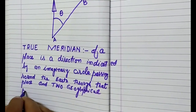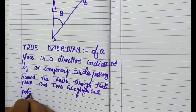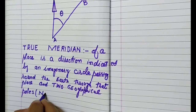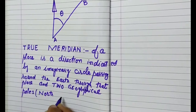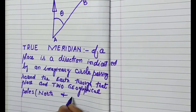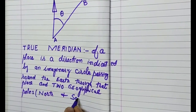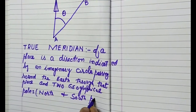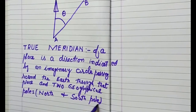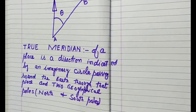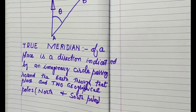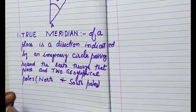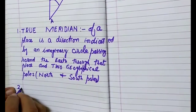For example, our north and south poles — this is actually the true meridian. The second type is the magnetic meridian.